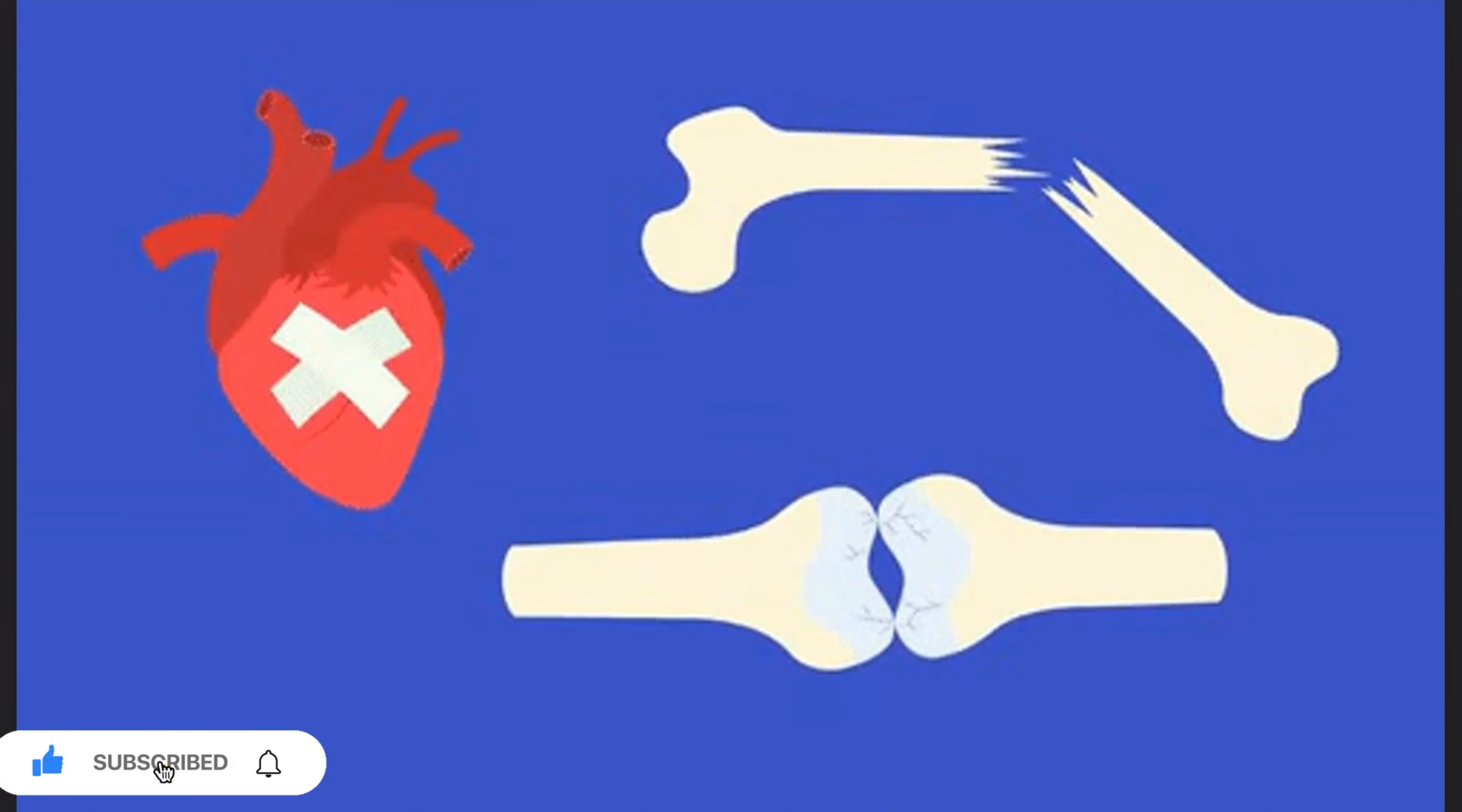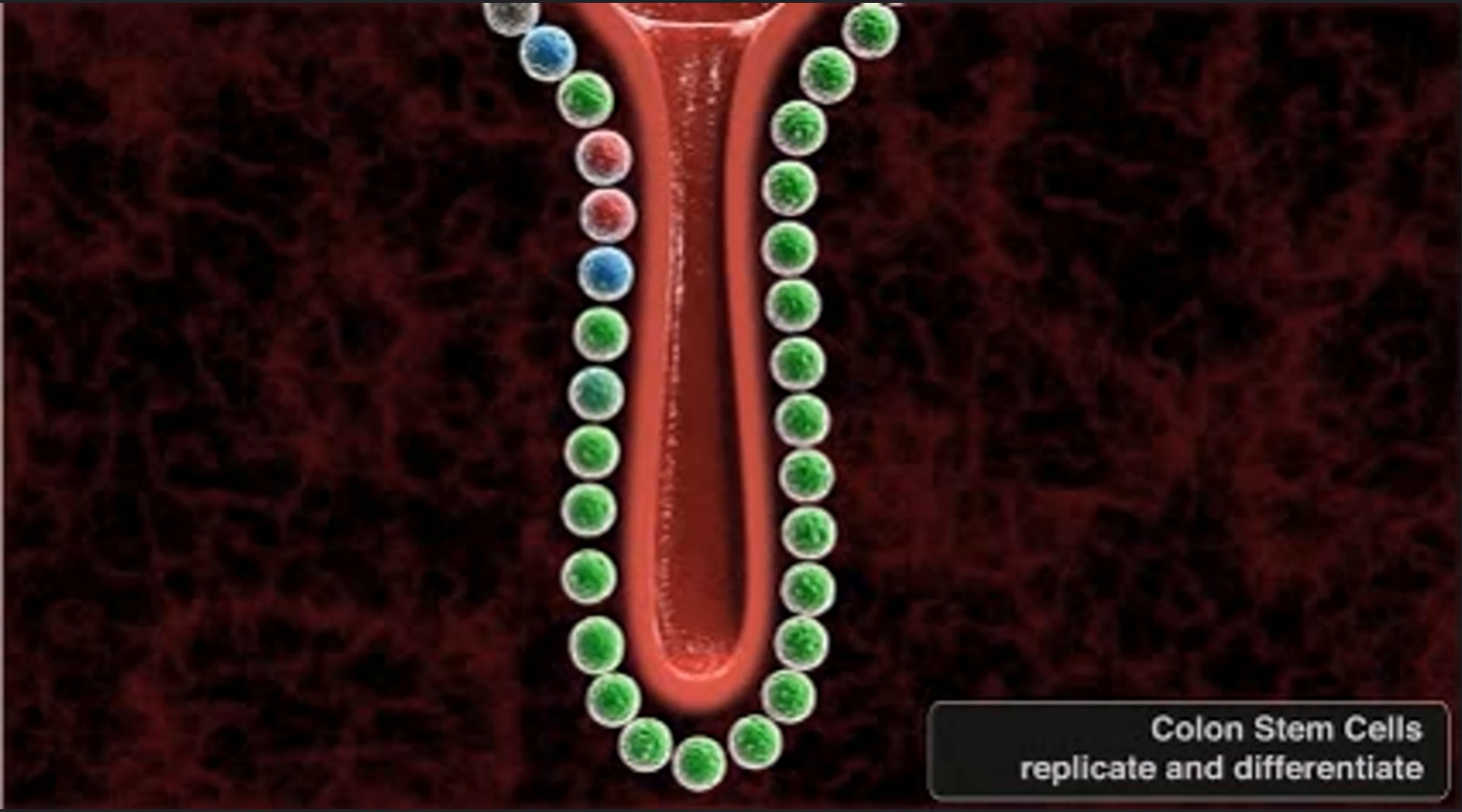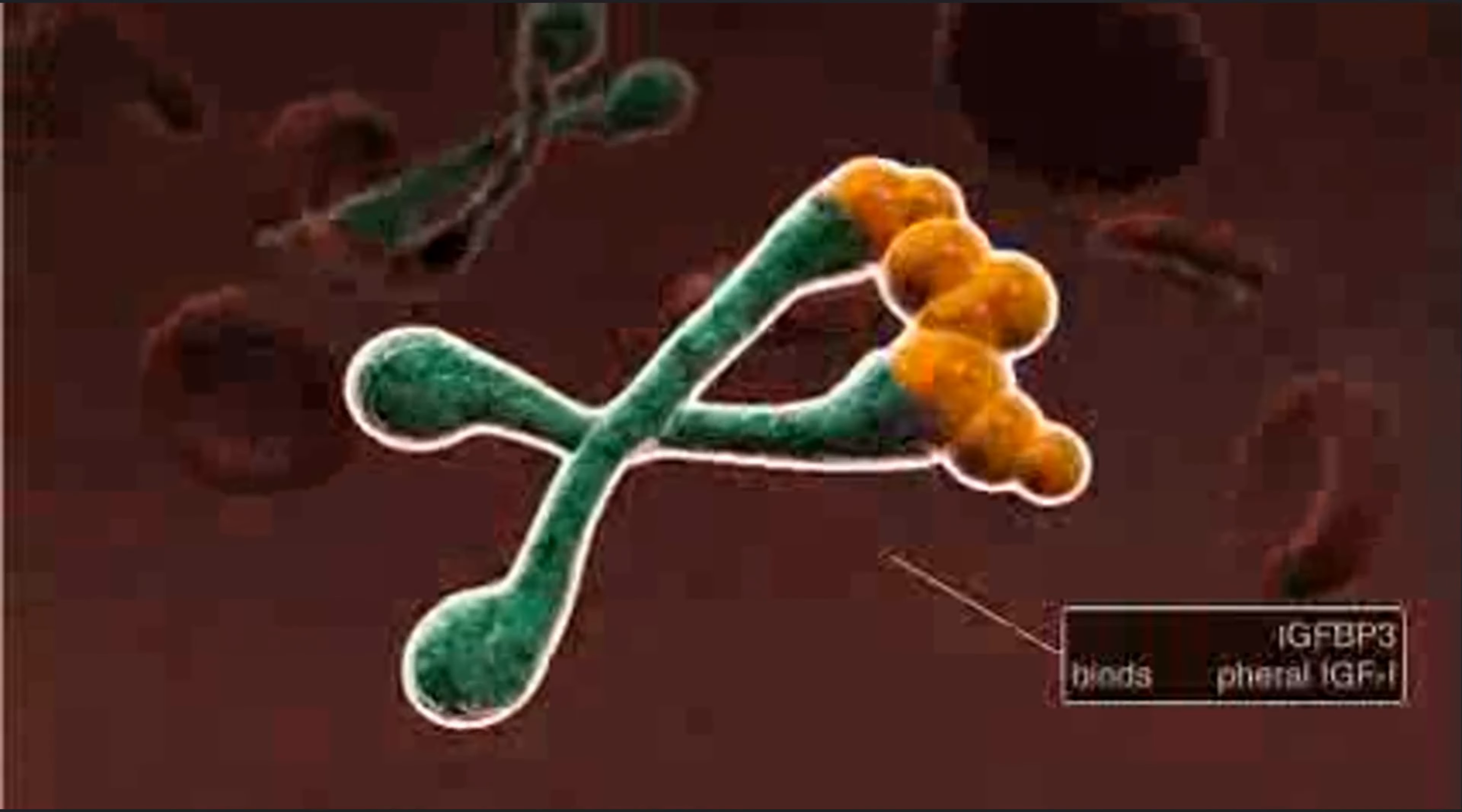Earlier, Zernika-Getz and her team, as well as a competing team in Israel, had reported the production of model embryo-like structures using stem cells from mice. These structures, referred to as embryoids, exhibited the initial development of organs such as the brain, heart and intestinal tract after approximately eight days of cultivation.